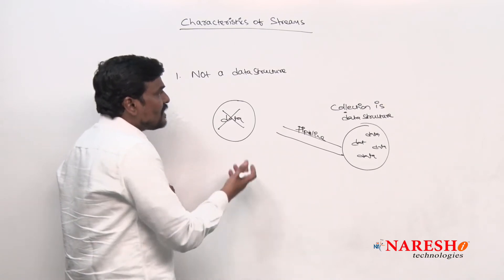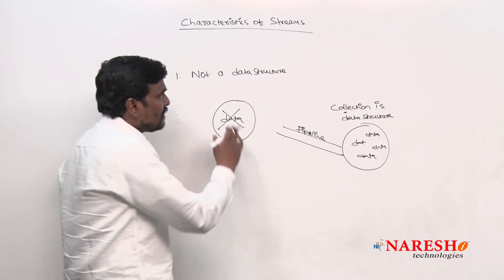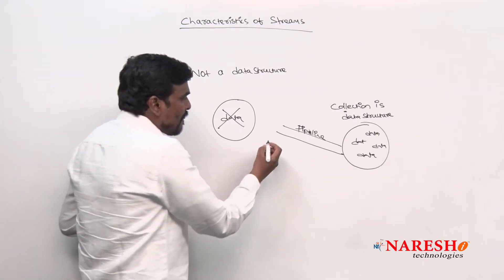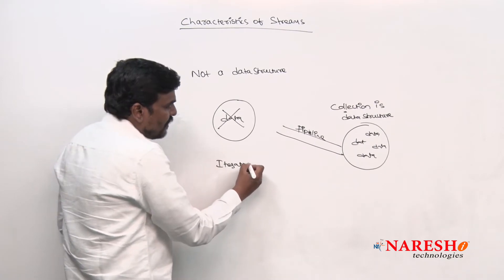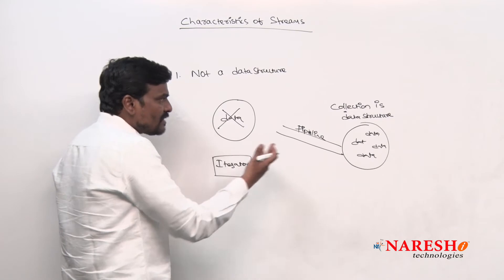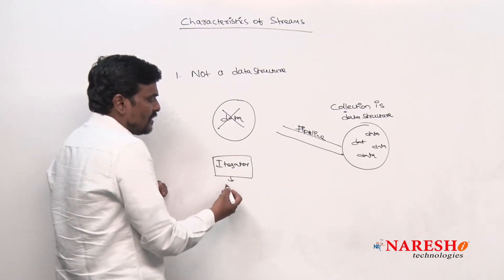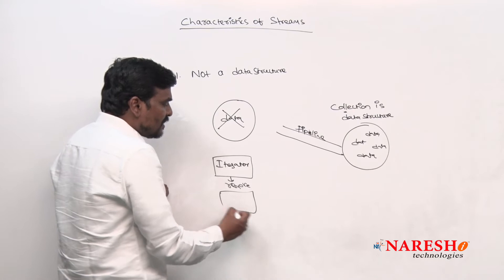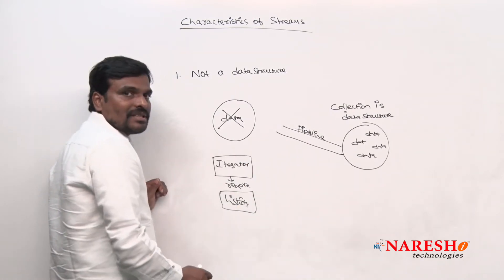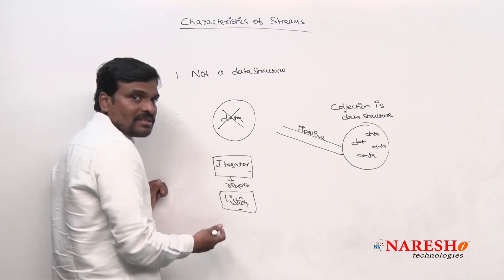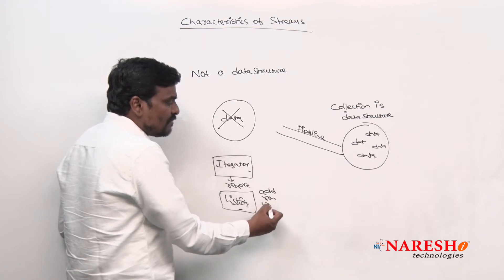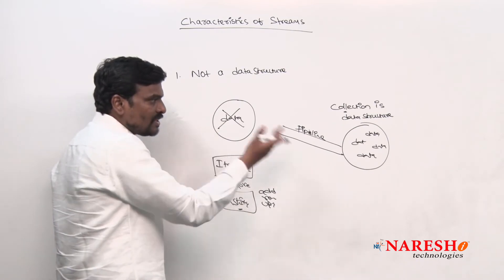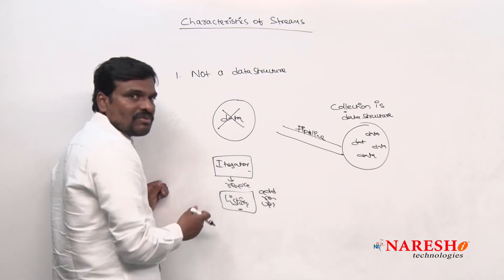A stream is immutable, meaning the stream does not make any changes to the underlying data structure. For example, if you are using an iterator, you can make changes to a collection because iterator supports methods like remove. If you use a list iterator, it can perform operations like adding, removing, and updating. But when it comes to a stream, stream is completely immutable — you can just read the data, but you cannot modify the data in the collection.